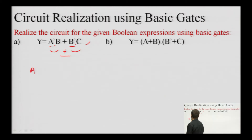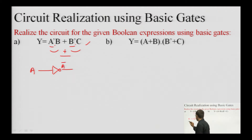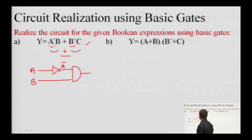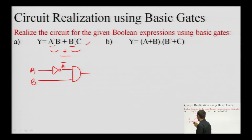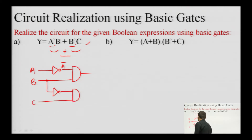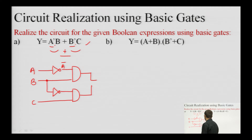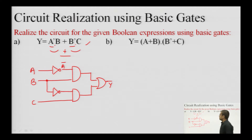A will be complemented to generate A bar. Then B is there, which prepares my first product. Similarly, the second product is B bar times C. B can be taken from here, which generates B bar, and this has to be multiplied with C. Both products are ready and are added together with the help of an OR gate. This is a simple realization of the expression — we can call this an AND-OR structure.